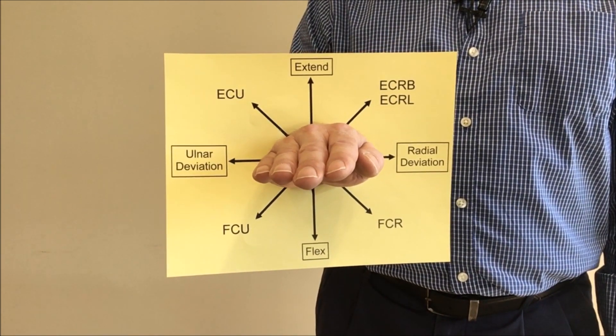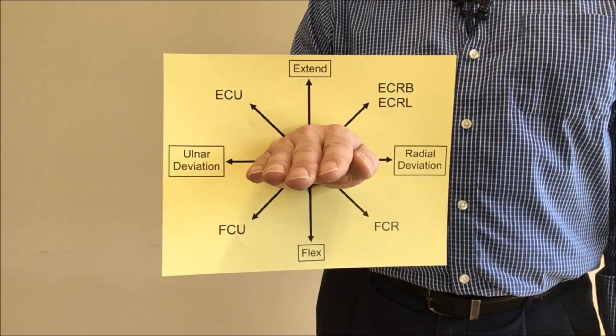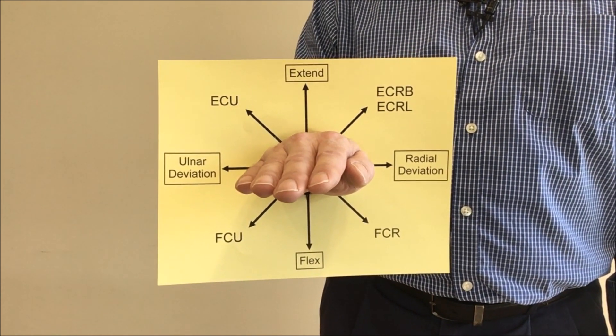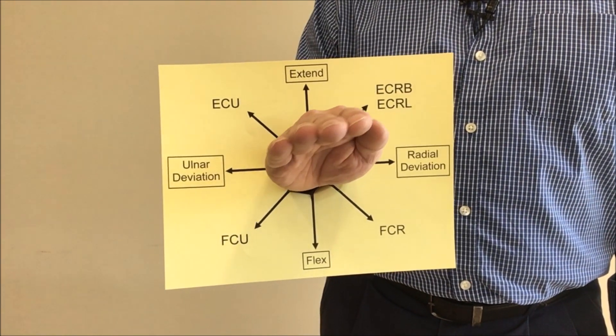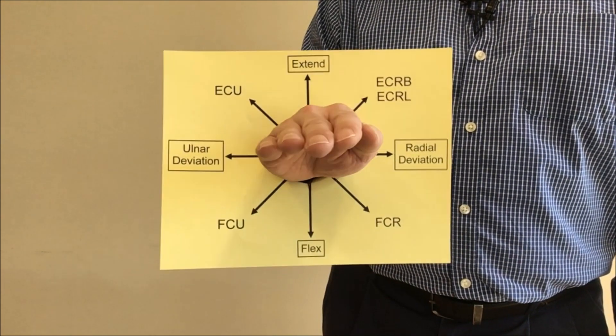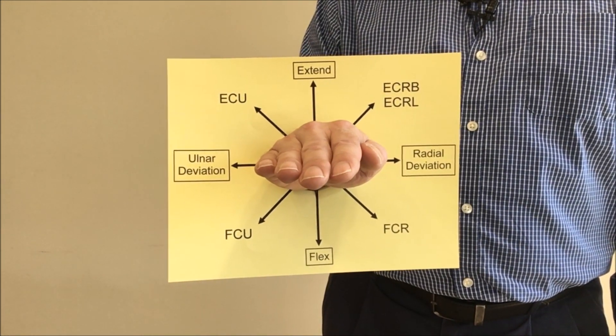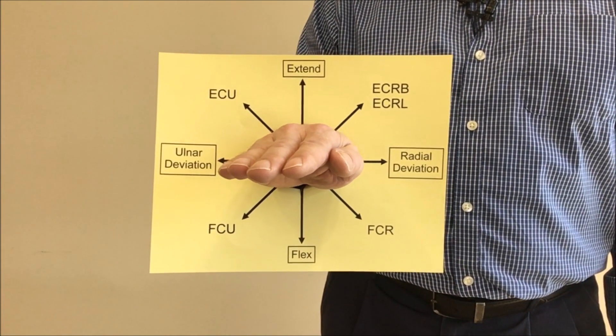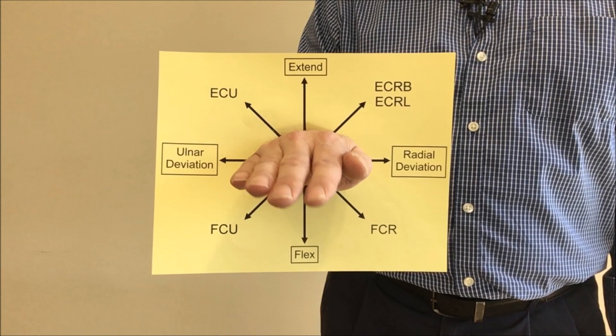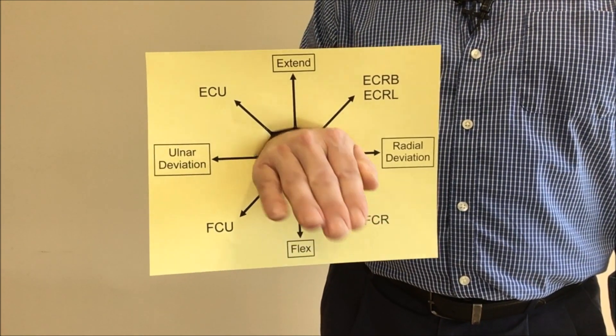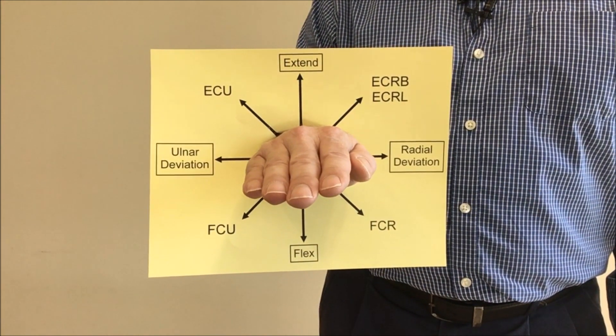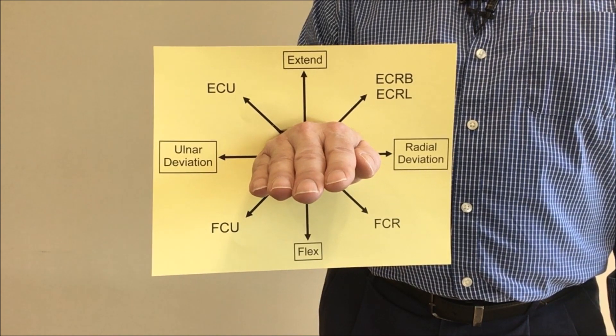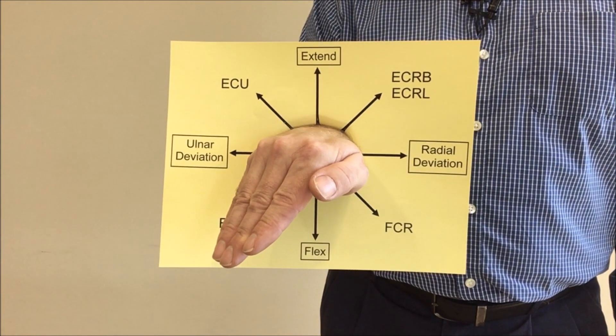So extensor carpi radialis brevis and extensor carpi radialis longus, for example, will pull the hand in that direction. Extensor carpi ulnaris will pull the hand in that direction. Flexor carpi radialis will pull the hand in that direction and flexor carpi ulnaris will pull the hand in that direction.